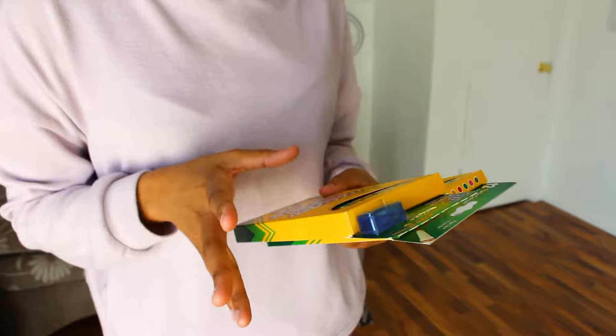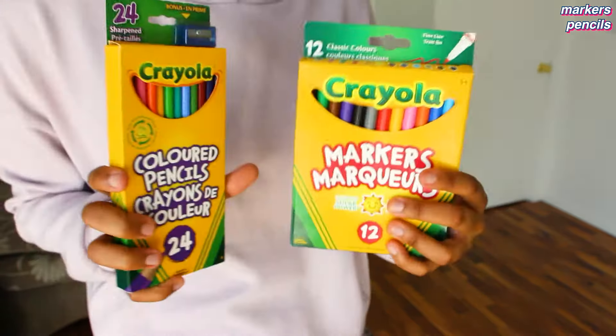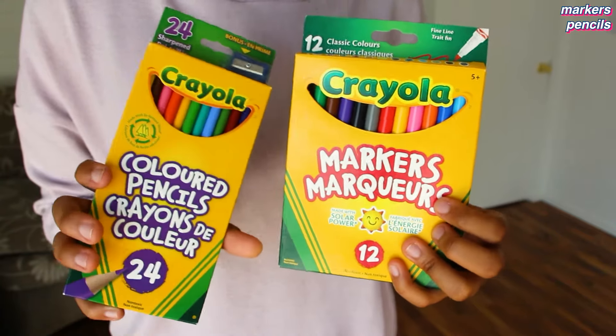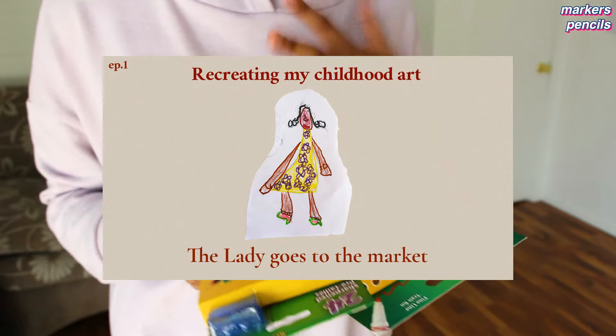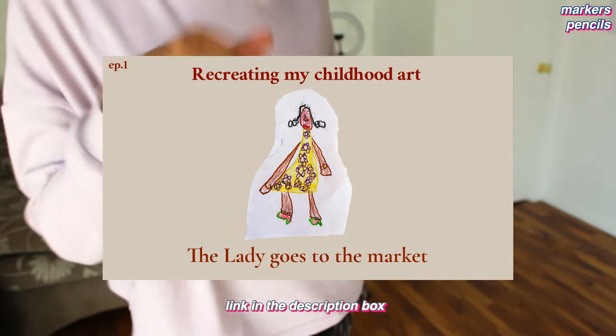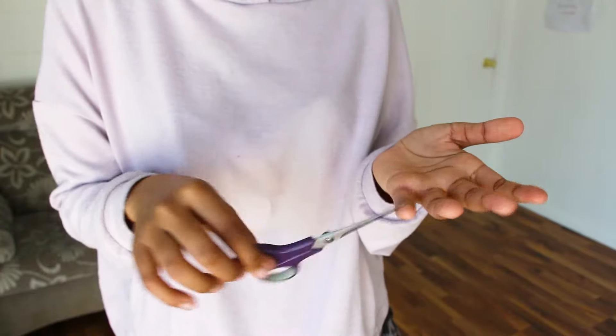Next you will need some markers and pencils. This is the one I'm going to use - Crayola markers and colored pencils. This is the same pencil and markers that I used in my video when I recreated my childhood art. I put the link in the description box.